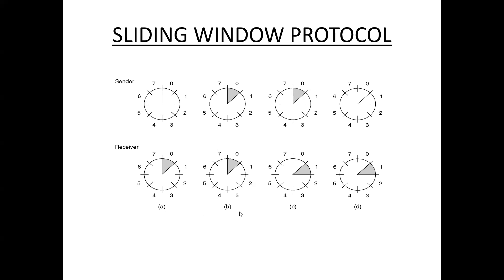In one-bit sliding window protocol, the size of the sender window is 1 and the size of the receiver window is 1. The sequence number ranges from 0 to 7. In this example we take 3 bits, so n equals 3, and the sequence number ranges from 0 to 2^3 minus 1, that is 0 to 7.